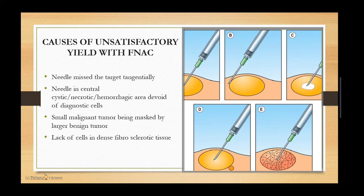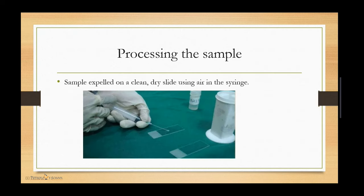Causes of unsatisfactory yield with FNAC include: the needle missing the target tangentially; the needle entering a cystic, necrotic, or hemorrhagic area devoid of diagnostic cells; a small malignant tumor being masked by a large benign tumor; and lack of cells in dense fibrosclerotic tissues.